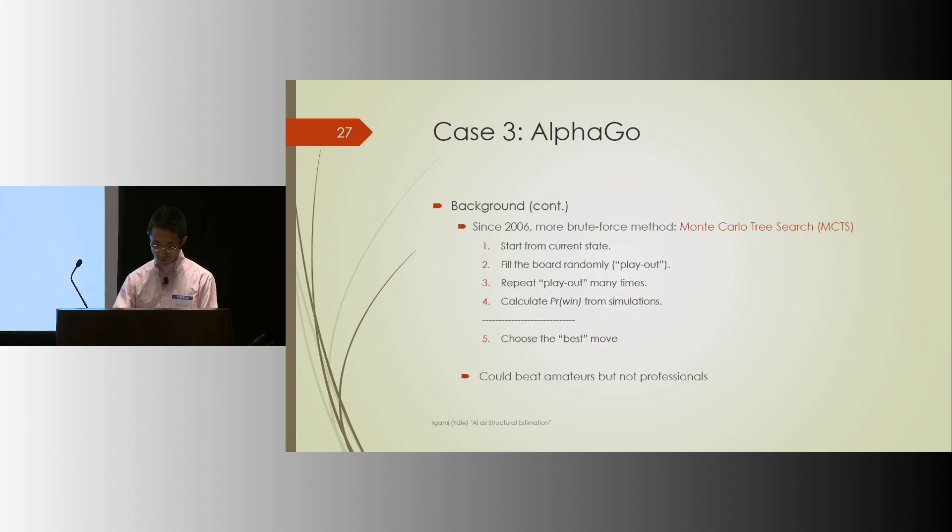And then they resorted to a brute force numerical approach. Start from any state, like current state, filling the board randomly until the end of the game when the board is filled by stones. Repeat this play out many times, like many, many times. That's going to give a sense of the probability of winning or losing starting from that current state. And choose the best move that would lead to the best winning state. And this algorithm could beat amateurs but not professionals. That was the previous effort before AlphaGo came along.